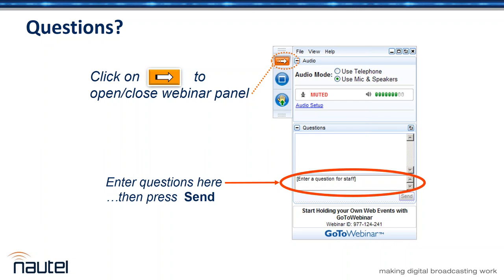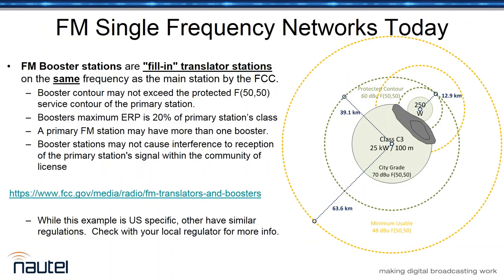Let's look at how single frequency networks are used today. The FCC essentially treats them as fill-in translator stations that just happen to be on the same frequency. If you have terrain obstruction blocking service to a community, you put in a booster — as long as the booster's protected contour is within the primary's protected contour and the ERP is less than 20% of the main station's, you're good to go. You can also have more than one booster.